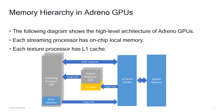On the other hand, if a kernel reads an OpenCL buffer, the data comes from system memory and only goes through L2 cache or U cache, and enters SP for consumption by the kernel. Therefore, in Adreno GPUs compared to OpenCL buffers, OpenCL images are backed by one more level of cache.